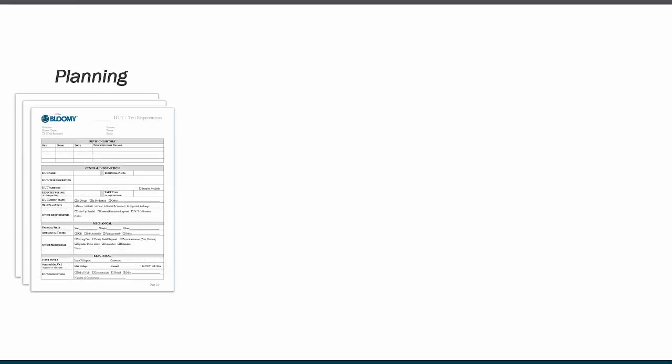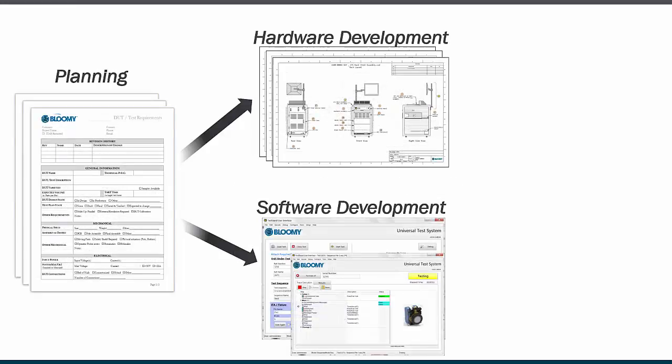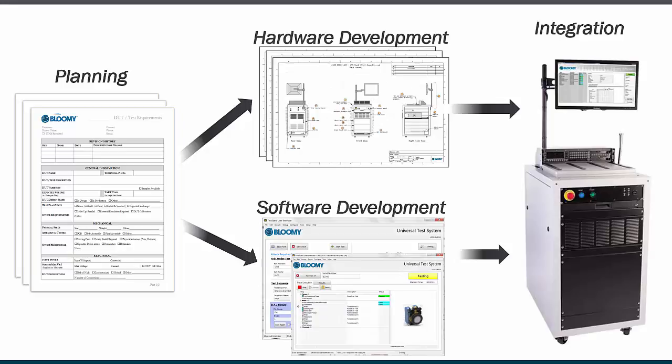The design and development of automated test equipment presents many challenges from initial planning through hardware and software development to final integration. At each stage of the process, changes become more difficult and costly to implement. Because of this, modularity, flexibility, and scalability are key to a successful automated functional test system.